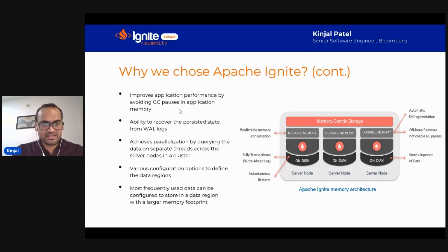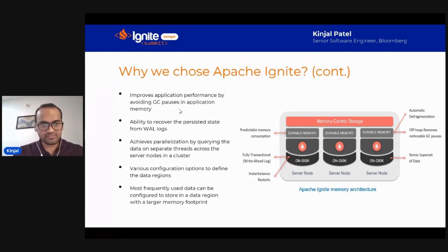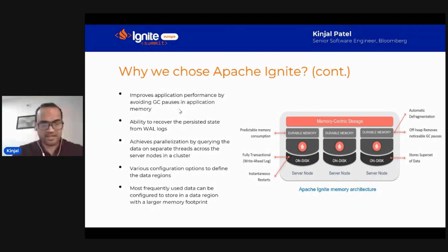Ignite achieves parallelization by querying data on separate threads across server nodes in a cluster. It comes with various thread pools — data streamer pools, public thread pools, query thread pools, and more. We can leverage these to achieve parallelization. It also has various configuration options to define data regions and standard APIs to configure data regions that are most frequently used.